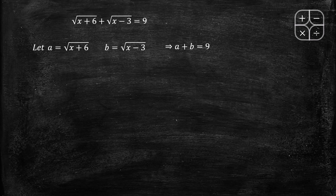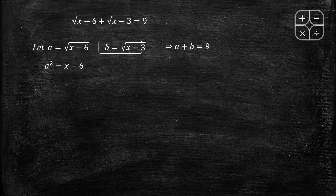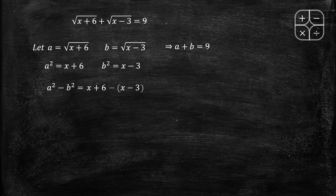Let a equal square root of x plus 6, so a squared equals x plus 6. Let b equal square root of x minus 3, so b squared equals x minus 3. Therefore a squared minus b squared equals (x plus 6) minus (x minus 3).